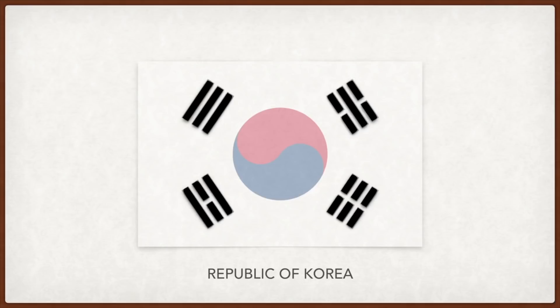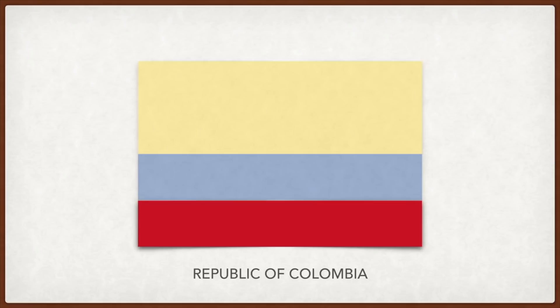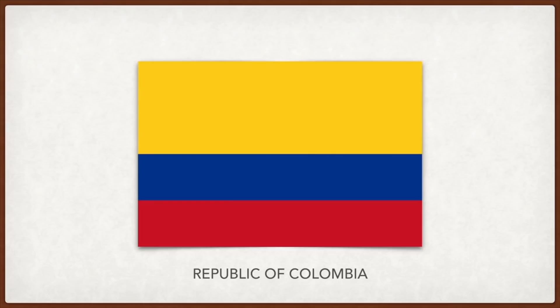Colombia: yellow represents justice, blue loyalty, and red the victory against the Spanish for independence. A popular children's song says that yellow represents the gold that Colombia had before the Spanish came, blue the two oceans it borders, and red the blood spilt for independence.